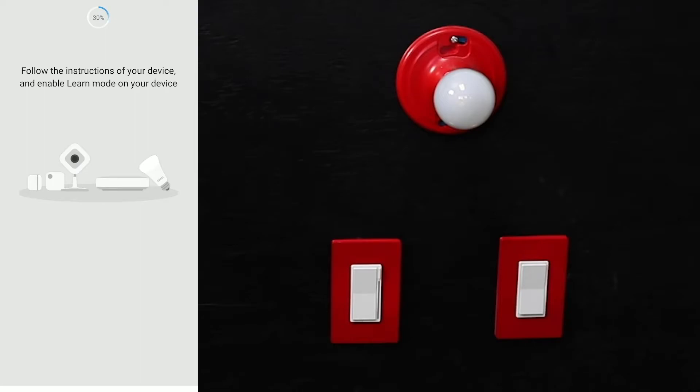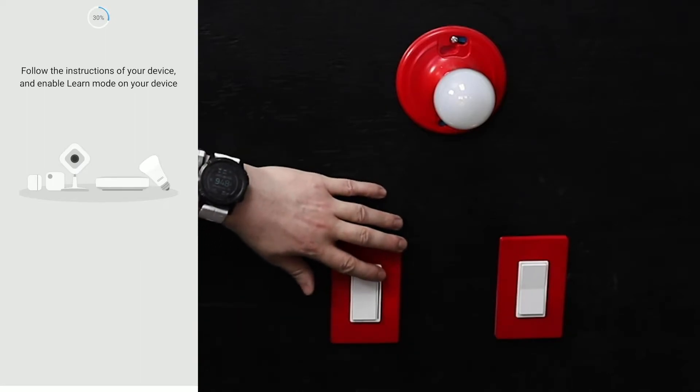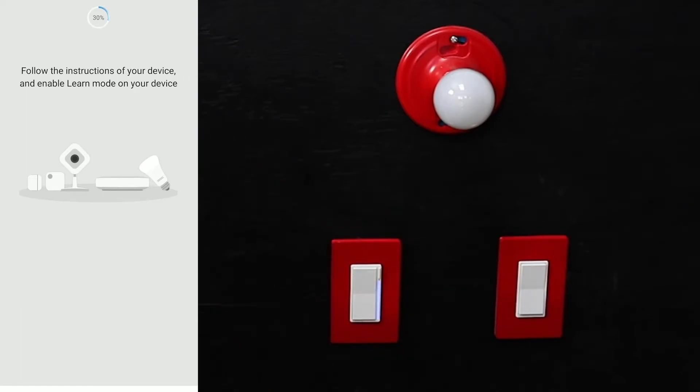Go ahead and press this configuration button three times: one, two, three. You'll notice that the LED bar pulses blue - that means it's in pairing mode. When it turns green, it means it's successful. If it turns red, then it's unsuccessful. As you can see, it turned green.